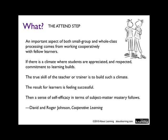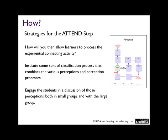Again, the Johnson Brothers on Cooperative Learning. How do you do this? You need to come up with ways to process what just happened. There are all kinds of graphic organizers you could use — a flow chart to see where would this take us if this is true, where would it take us if it's not true. Institute some sort of classification process that combines the various perceptions of the different students as well as the processes that they use to get there. Engage the students in a discussion of those perceptions, both in their small groups and then bring this to the large group.